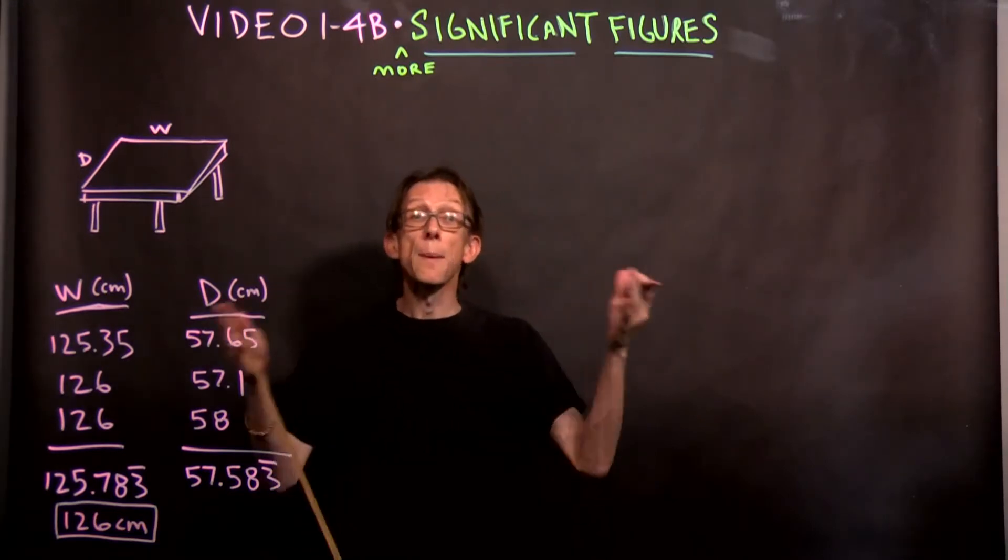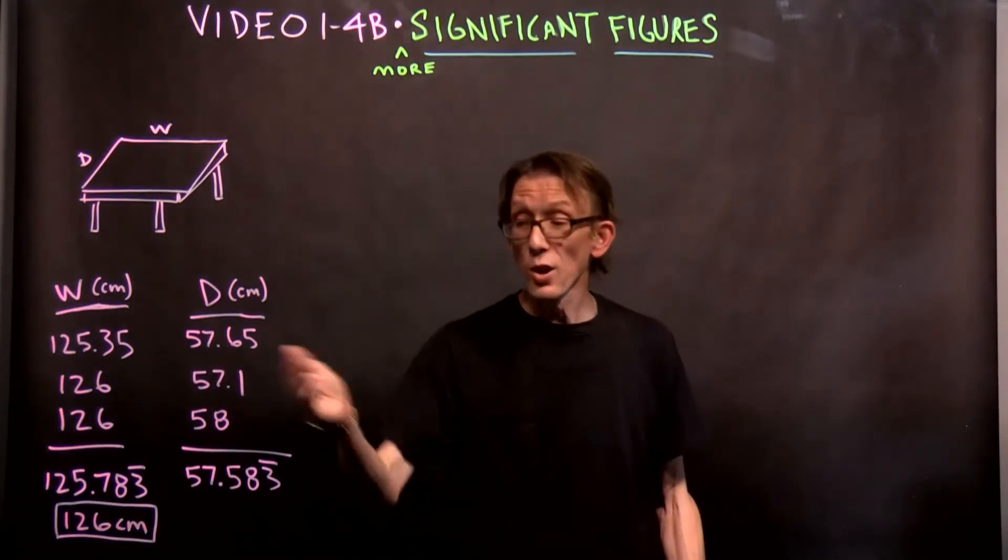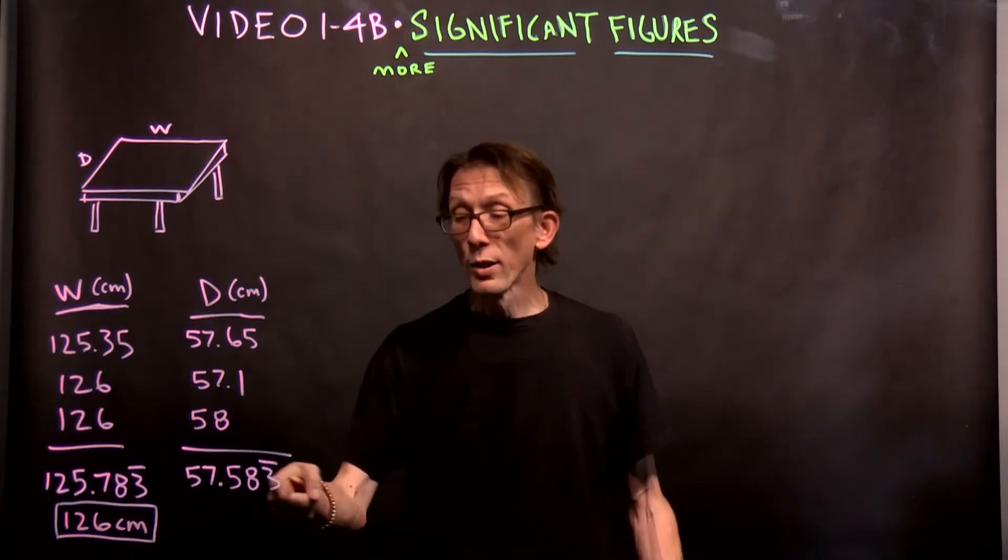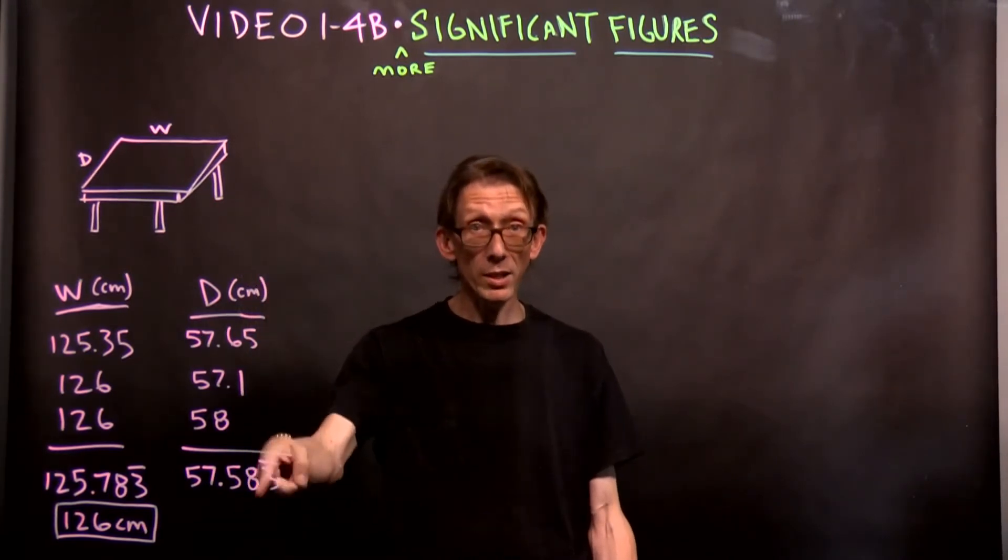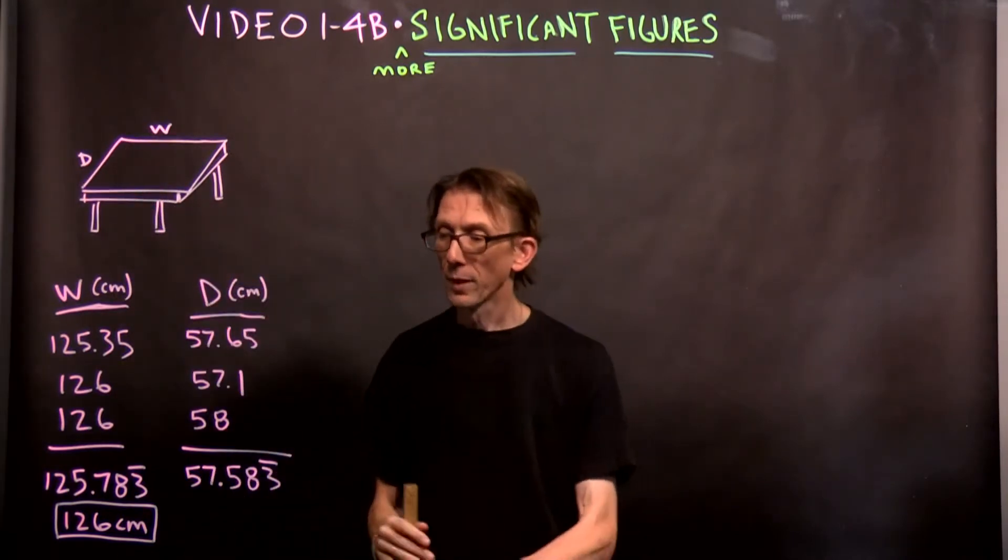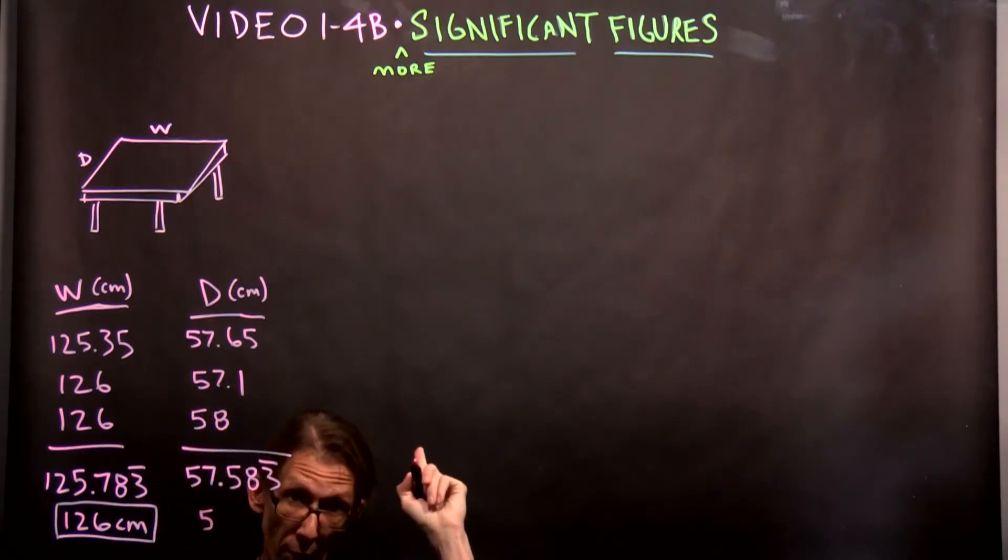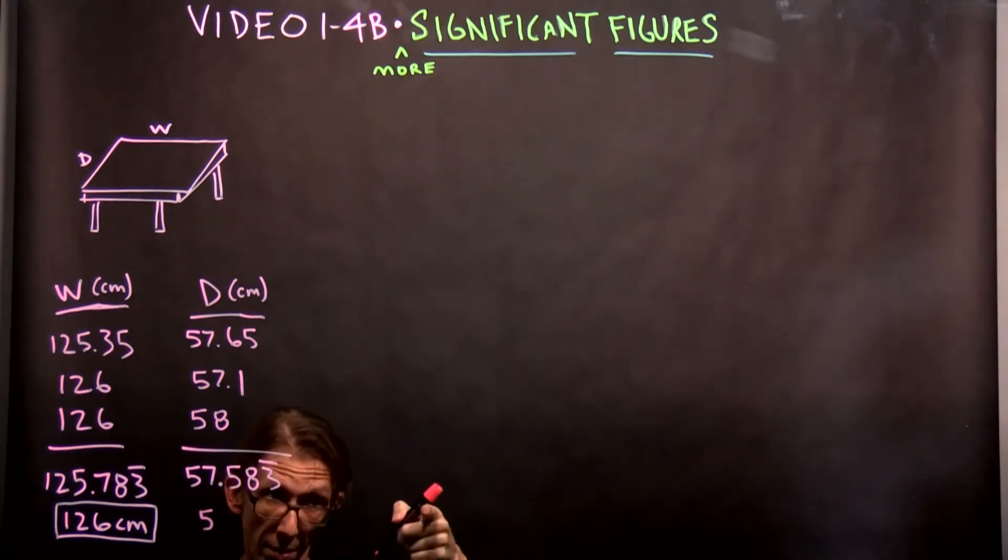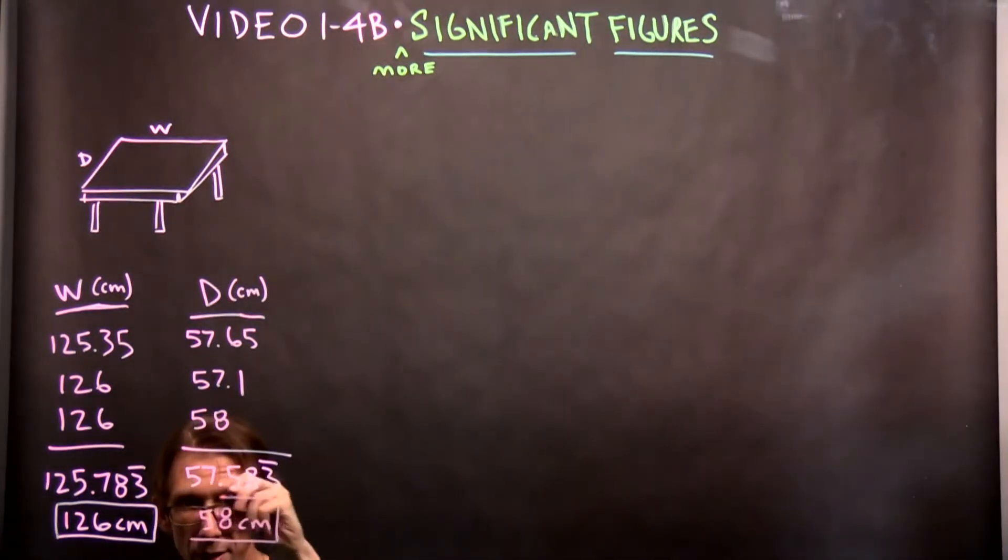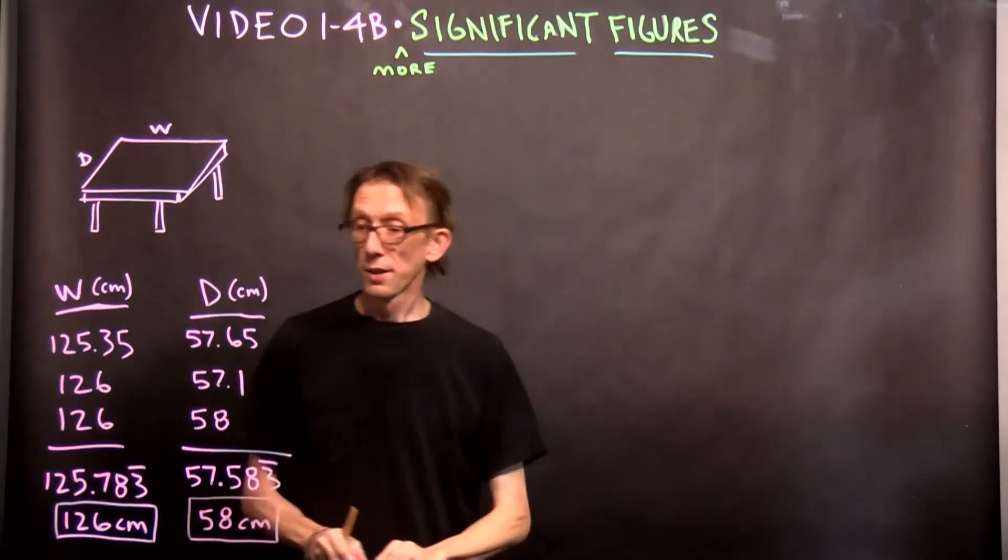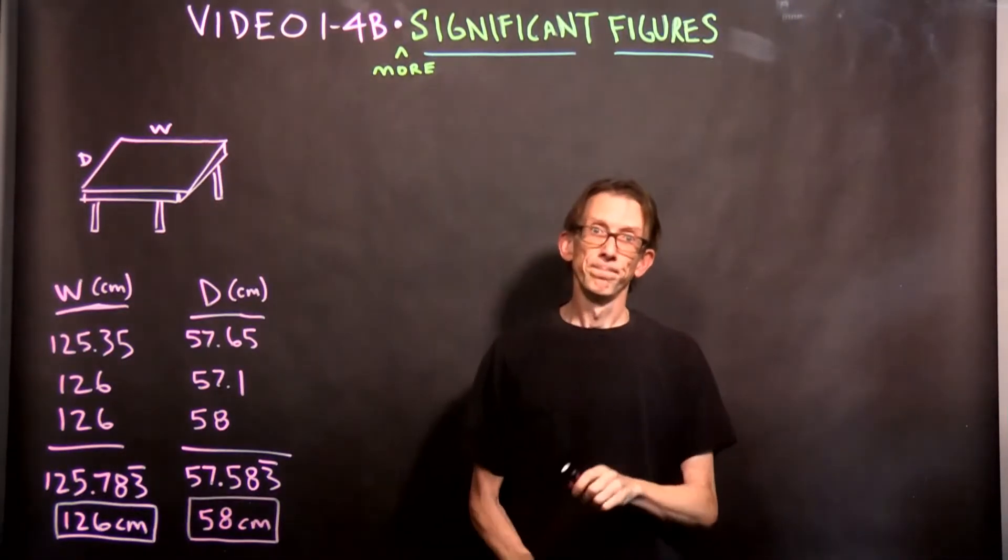Well, now we come to D. Same game. Student A gave us four significant figures, student B gave us three, and student C gave us two. So we have to round this to two significant figures, because two is the minimum that we were given for this calculation, for the question, what is D? So we have to round this to two. So it rounds to 50. What? 50. Say it out loud. There in your house, it rounds to 50. I heard it. Yes. 58. That is the answer. That is the width, 126 centimeters. The depth is 58 centimeters.